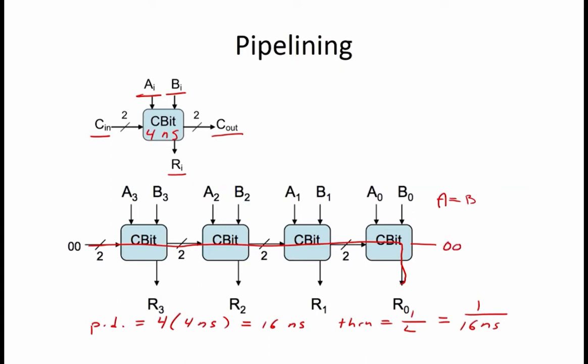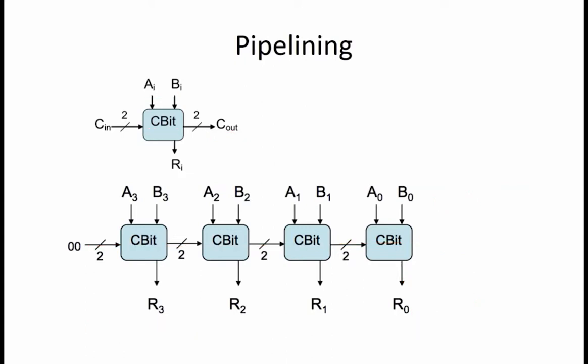Next, we want to pipeline this circuit for maximum throughput. We are given ideal pipeline registers for this step. Recall that ideal registers have a zero propagation delay and a zero setup time. In order to pipeline this circuit for maximum throughput, we want to add pipeline registers that isolate each individual C-bit module into its own pipeline stage. When pipelining a circuit, we want to add pipeline registers to all the outputs, so we begin by adding a contour that goes across all four outputs.